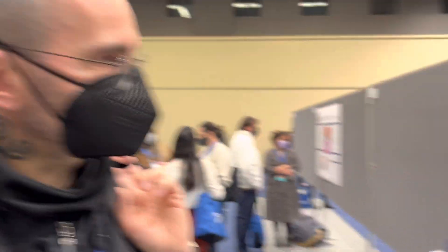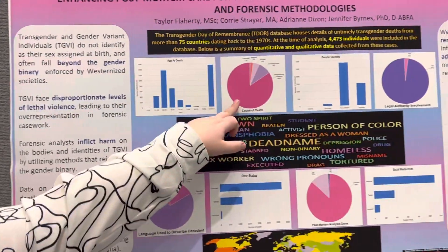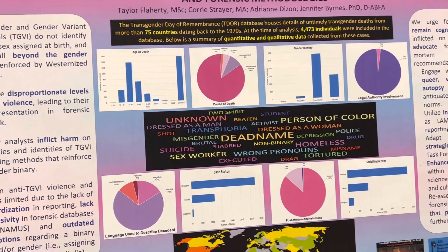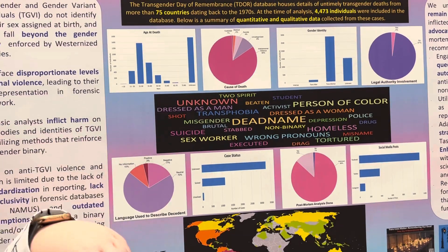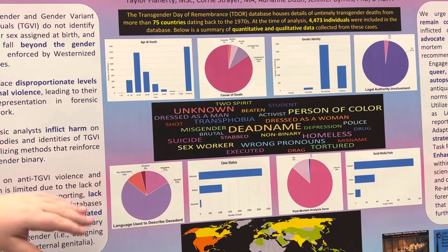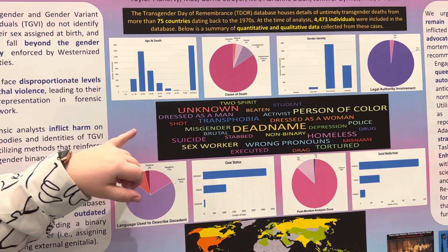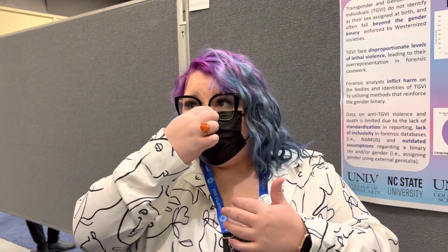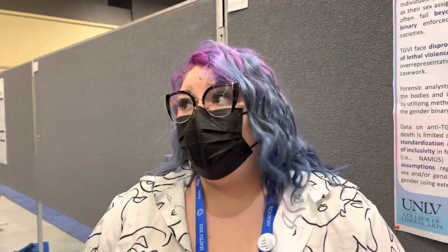This database is only for deceased individuals who died by unnatural causes. Interpersonal violence is the most common cause of death for these decedents. This word cloud shows some of the most prominent words throughout the entire database — a lot of individuals are shot, stabbed, or beaten. They're really brutal hate crimes that happen to many of these individuals who end up in medical examiners' and coroners' offices.